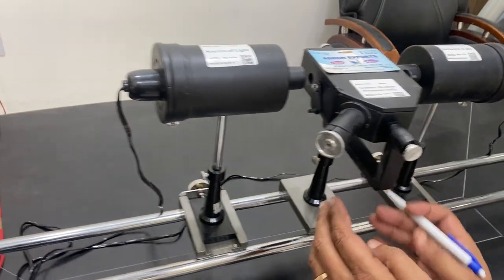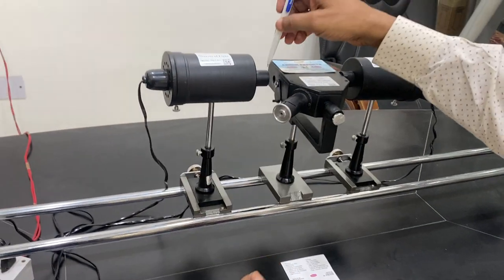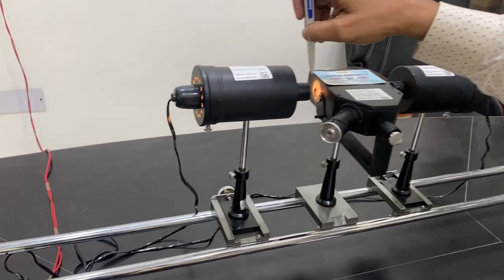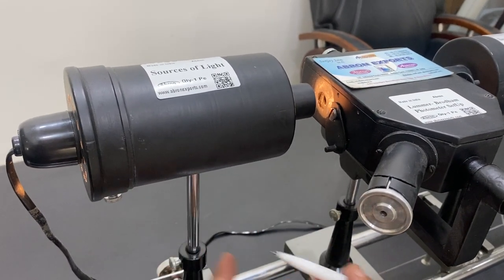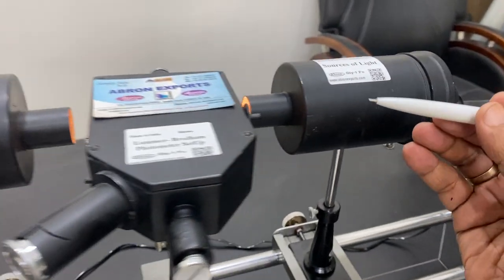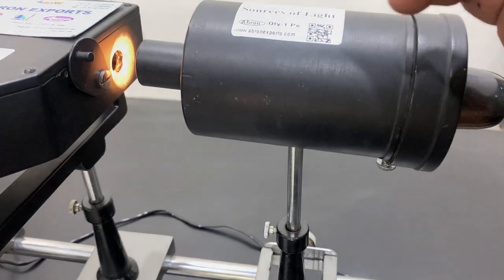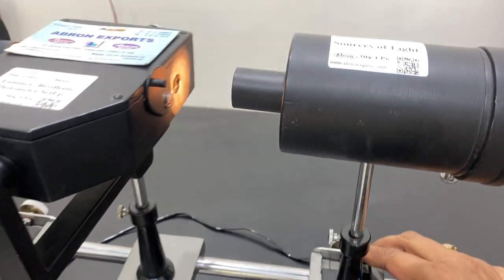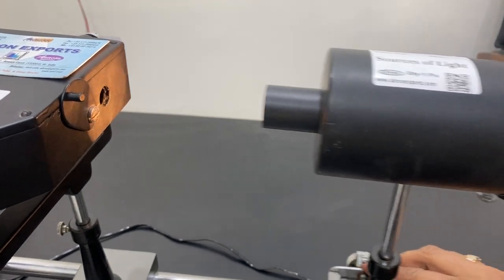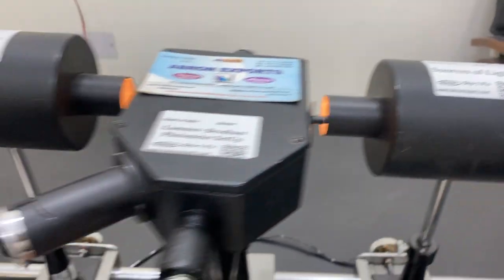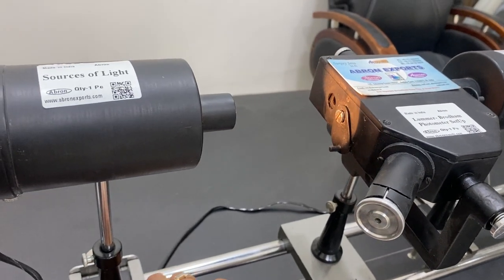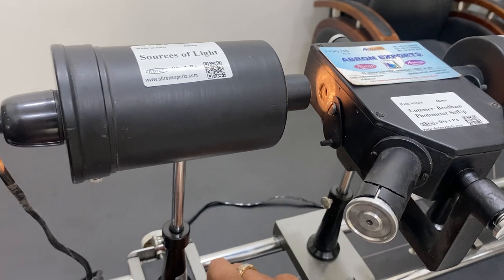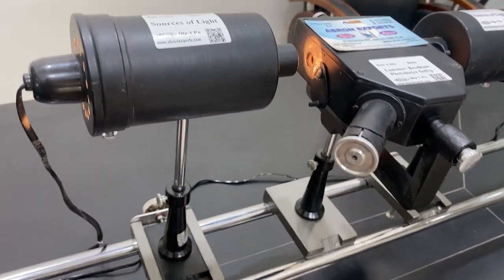Now I show you the experiment. The first experiment is to align them all. See, the light source is coming to the center. I can unscrew it, make it up and down, and similarly the light is falling on the other side in the center. Even if I move it far, it is still falling on this button. And same is here, I can move it far and then light is falling on the center. So the experiment starts like this.